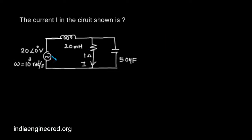Now we have an AC source of 20∠0 volts and its frequency is 10^3 radians per second. Now with given omega, we can calculate the impedances of this inductance and this capacitance.